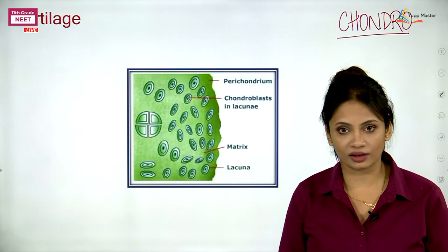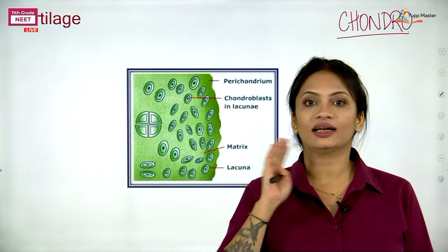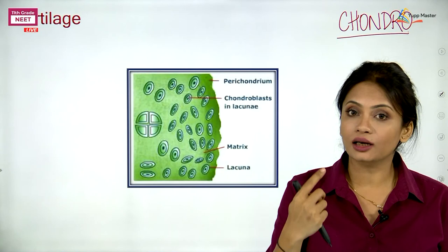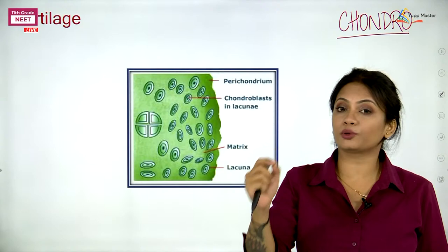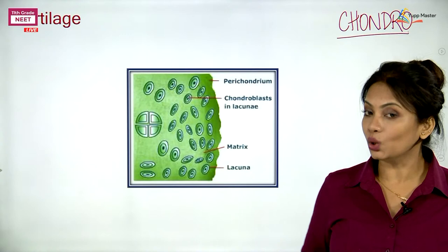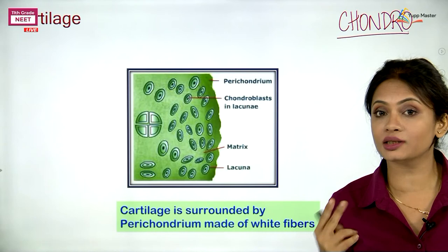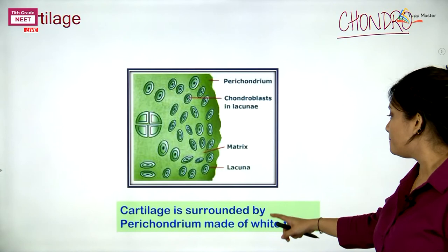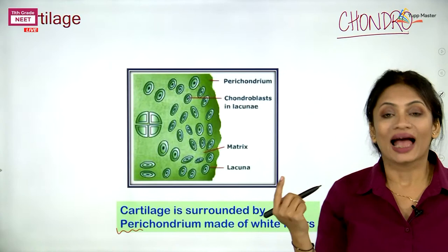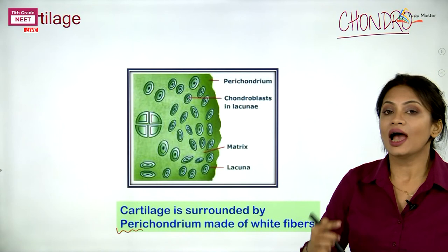Cartilage is always surrounded by fibres providing protection — a layer of fibres all around the cartilage. Since this layer has to be rigid and provide strength, these are the white fibres. White fibres are made up of collagen. This layer of white collagen fibres all around the cartilage is called the perichondrium — peri means all around, and because it is around the cartilage, we call it perichondrium.